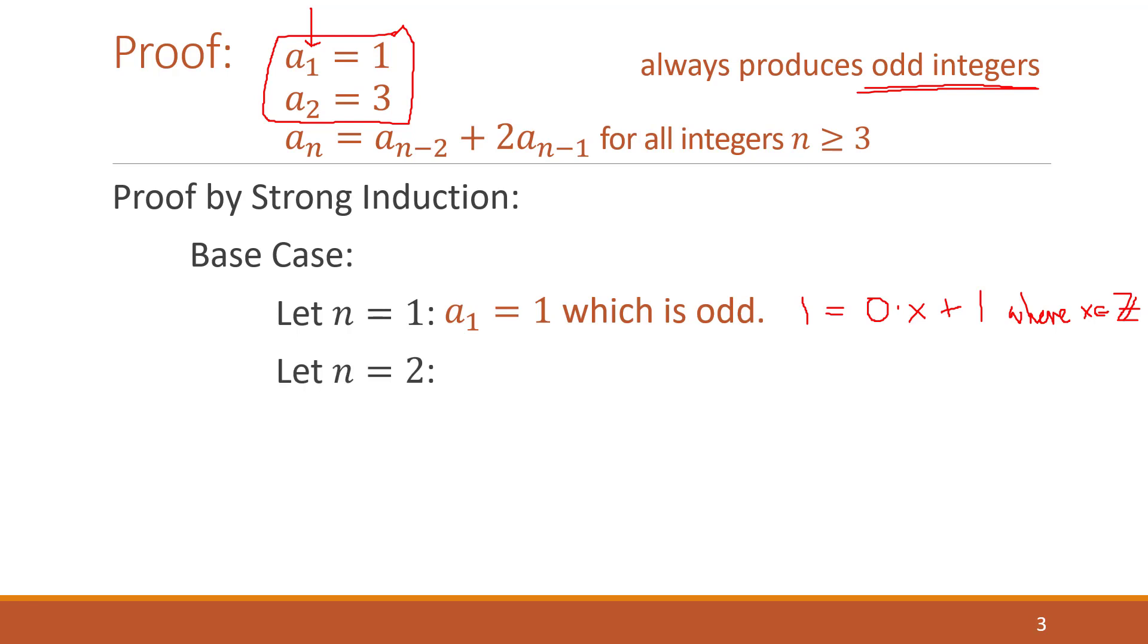The second base case is going to be two because that's our second base case in our recurrence relation. And once again, a sub two is three and three is odd.